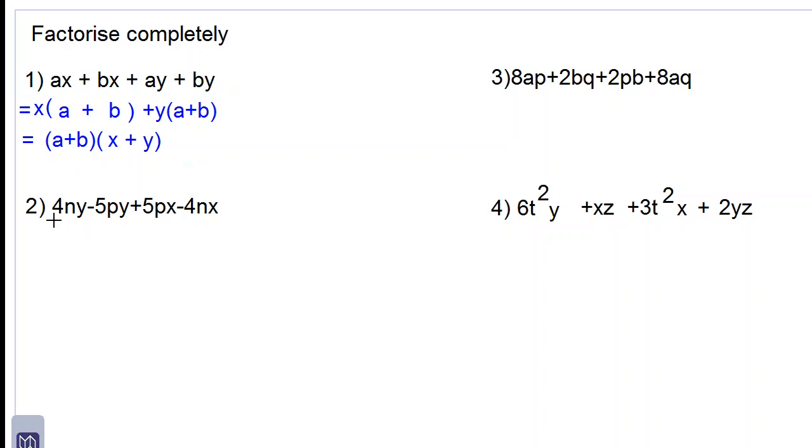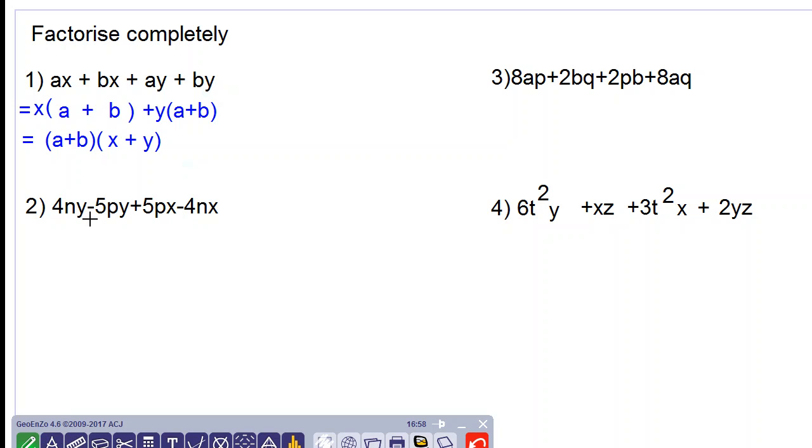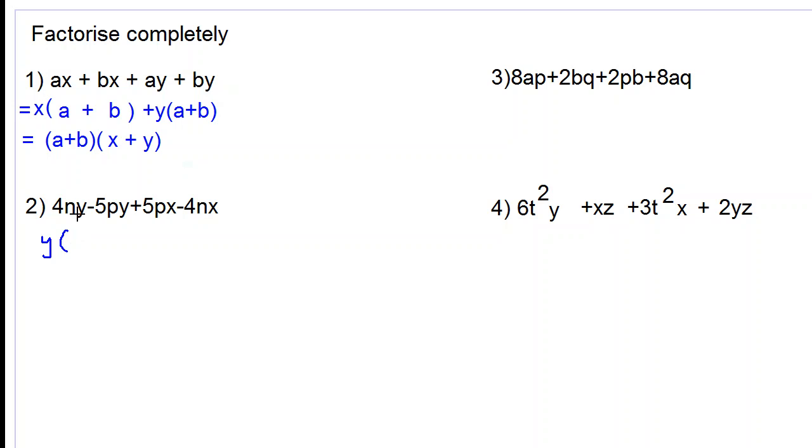Let's go to number 2 now. If we look at number 2, we have 4ny minus 5py plus 5px minus 4nx. Let's look at the first two terms. We have y as a common factor, so we take that out. If we take y out, we will remain with 4n here minus, and we take y out, y into y is 1, so we have 5p.